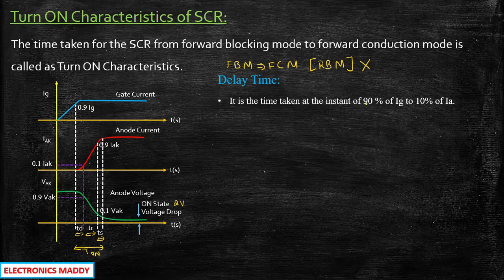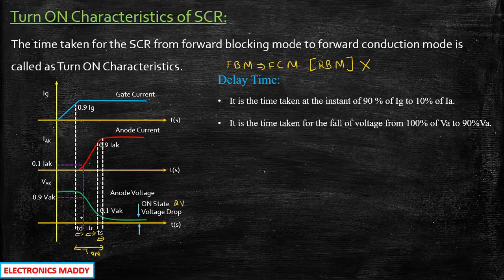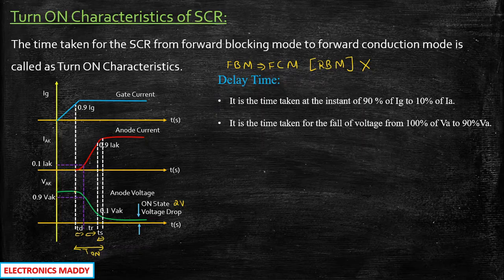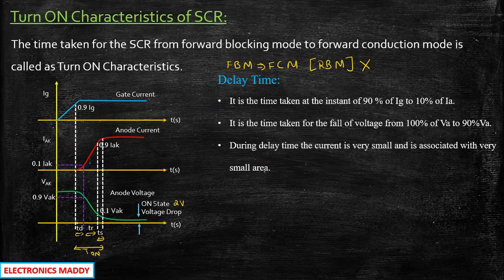Delay time is the time taken from the instant of 90% of IG to 10% of IA. In the waveform, 90% of IG to 10% of IA defines the delay time TD. Alternatively, it is the time taken for the voltage to fall from 100% of VA to 90% of VA. One important point: during delay time, the current is very small and associated with a very small area — this interval is very short in comparison to TR.